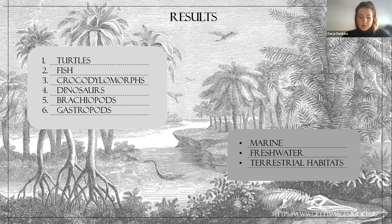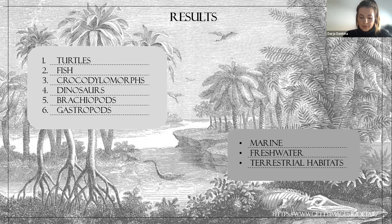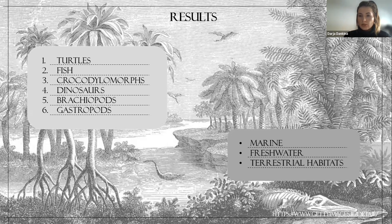There are two clear results for me. First, six different groups were found here: turtles, fish, crocodilomorphs, dinosaurs, brachiopods, and gastropods. Second, these finds represent several ecological niches — marine, freshwater, and terrestrial. As a scientist, the question in my mind is: why did so many different groups accumulate together in one place?